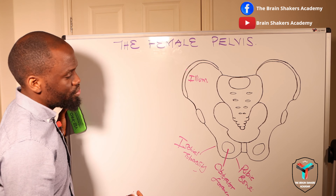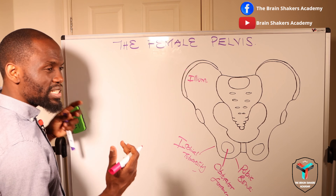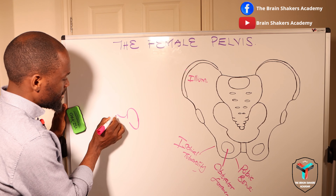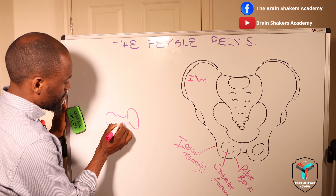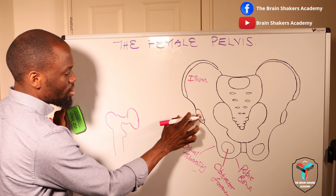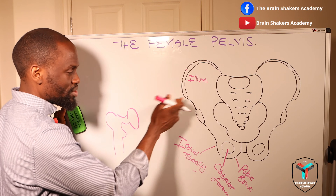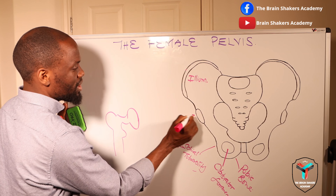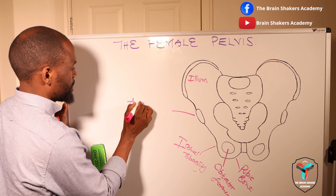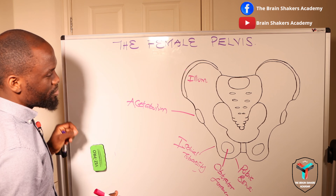The obturator foramen is there, and then you have this particular portion which is the point of articulation of the femur. You'll find that there is a femur on the other end here. This creates a socket for the femur to come and articulate in, so there is a connection of the pelvis to the lower limbs. This portion is what we refer to as the acetabulum.